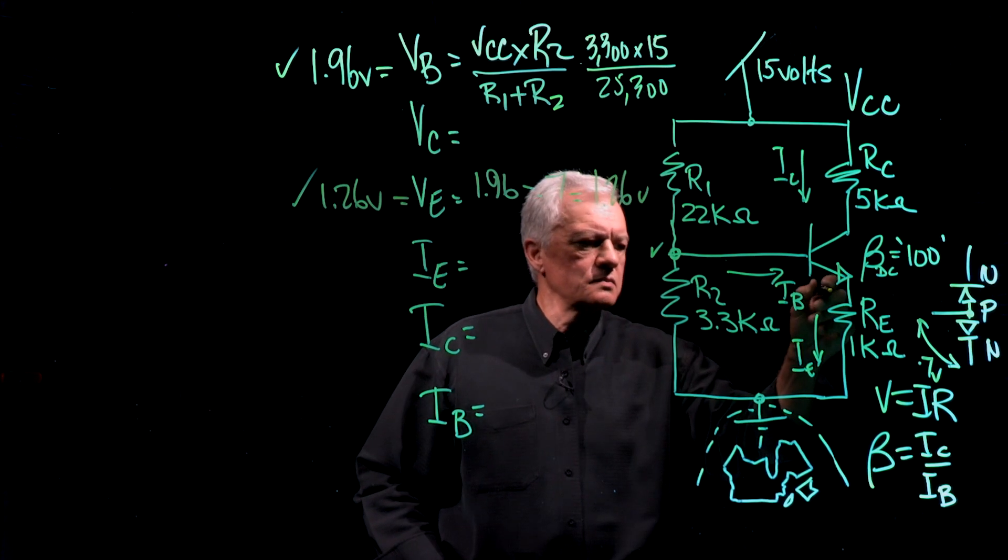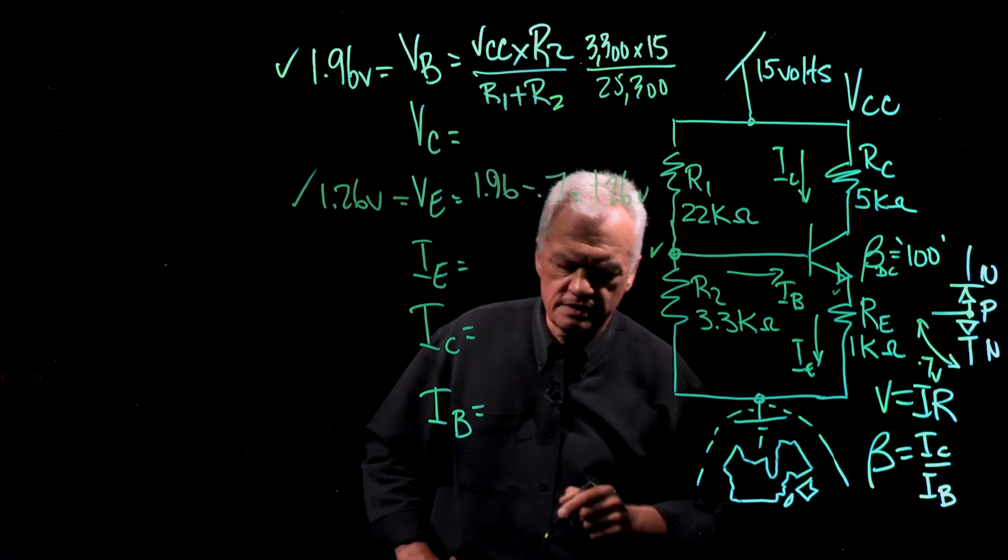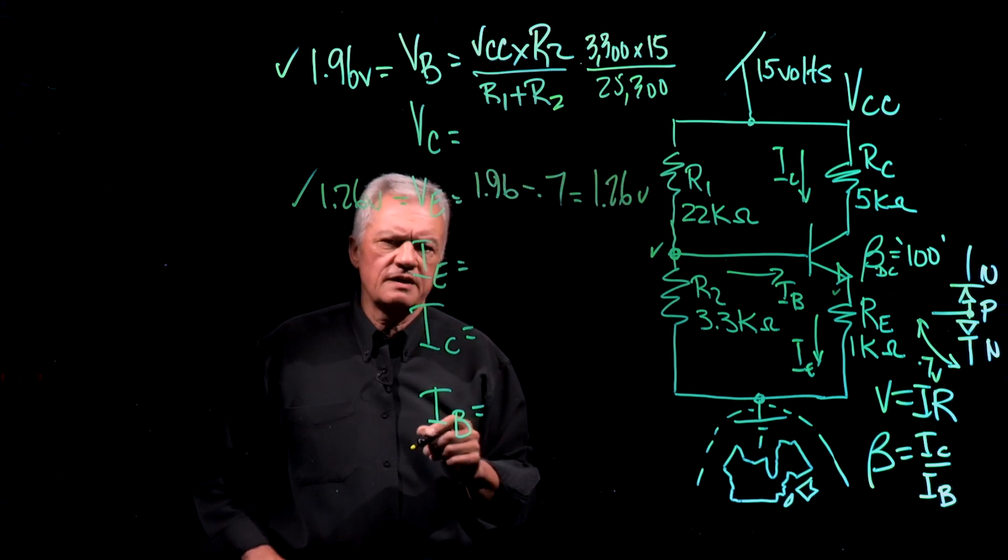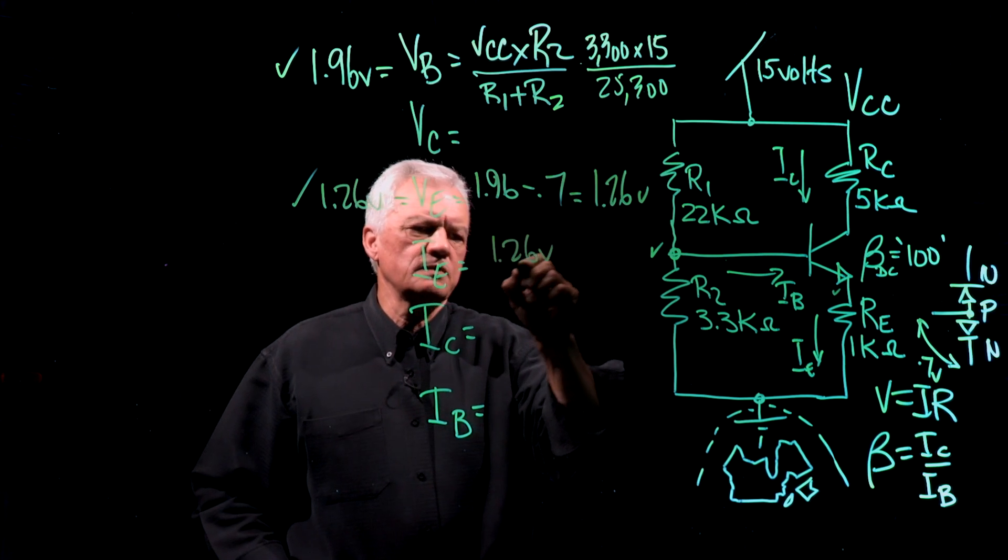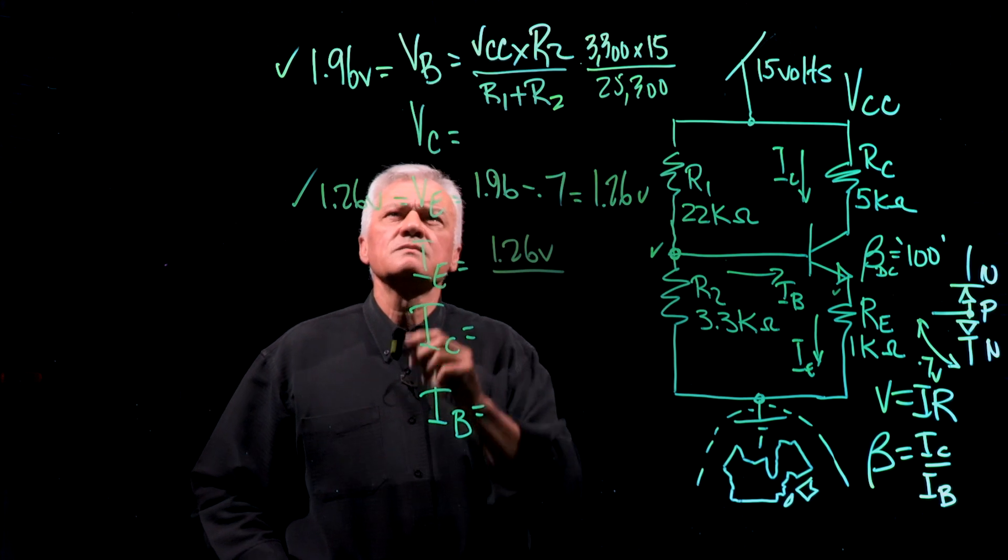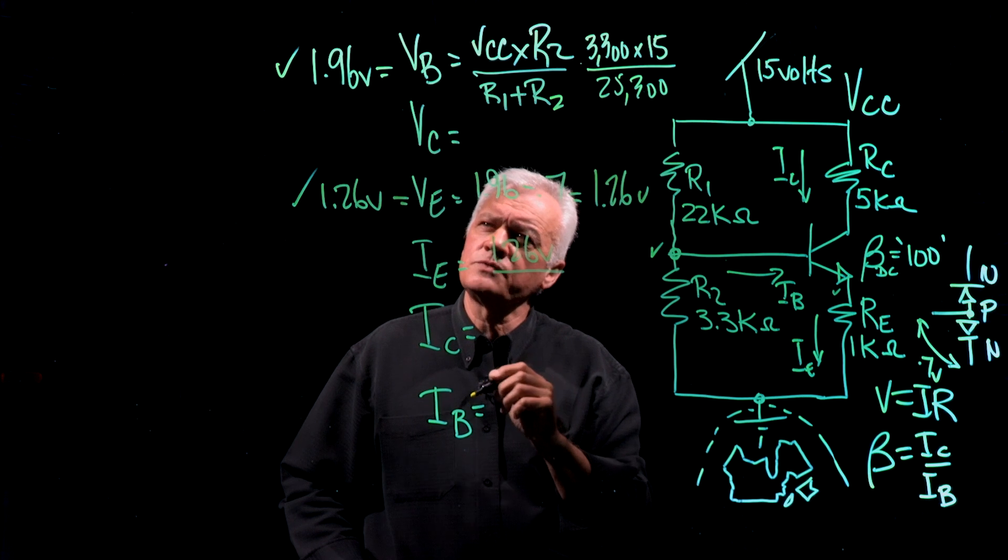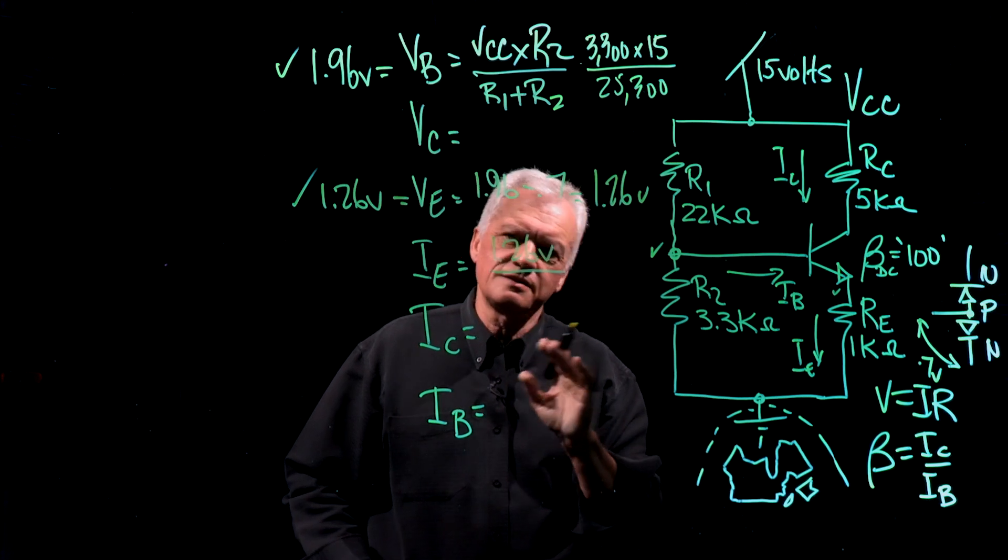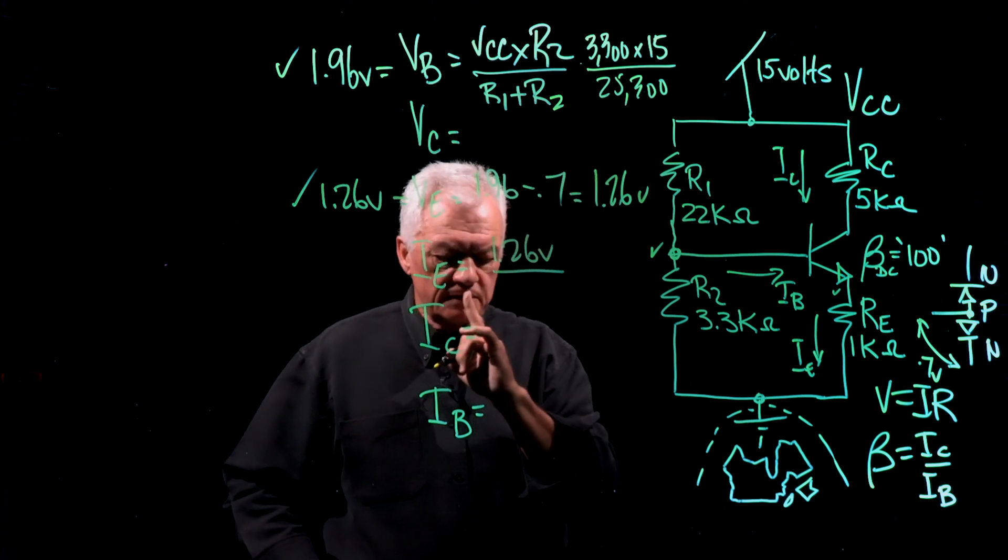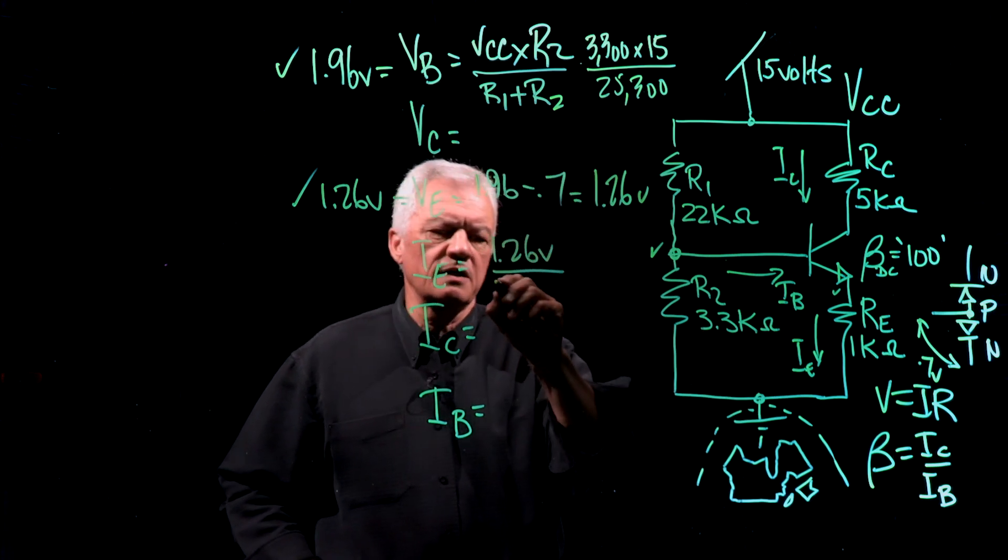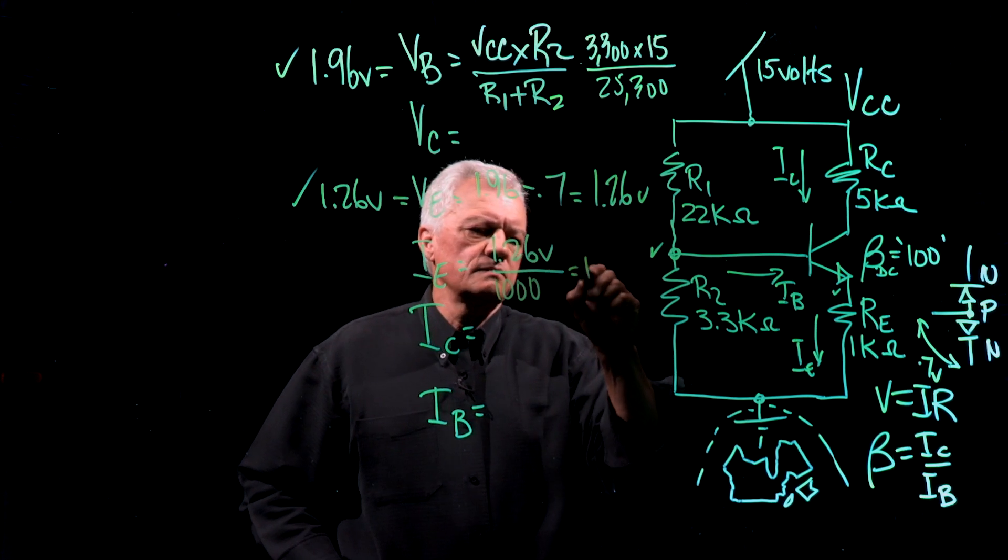If we know the value of VE here and we have a resistor there, then let's plug that number in to calculate IE. IE will be 1.26 volts divided by... Watch your symbols. I have some students who have used ohms for volts and such, and that's again totally incorrect. So 1.26, in this case here a nice easy number, 1,000 ohms. That's going to be equal to... anybody?